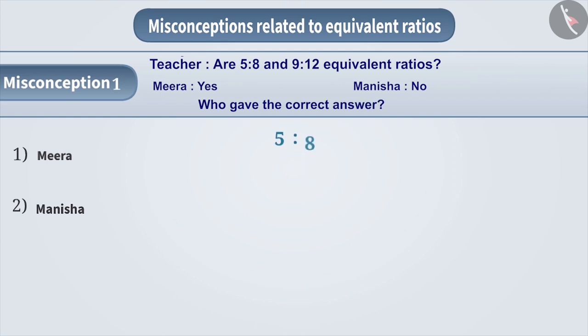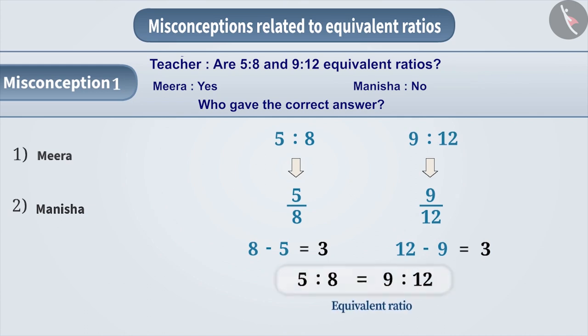We can write 5 is to 8 as 5 by 8 and 9 is to 12 as 9 by 12. You would think that just because 8 minus 5 is equal to 3 and 12 minus 9 is also equal to 3, the two ratios 5 is to 8 and 9 is to 12 are equivalent ratios. However, this is incorrect.